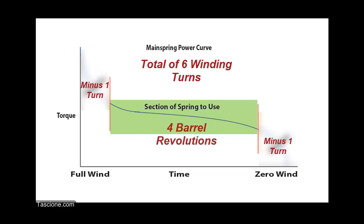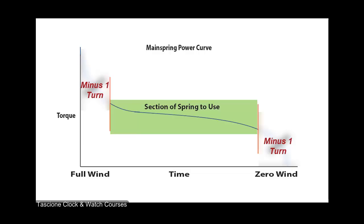So by designing the movement to run, say, eight hours for each revolution of the barrel, we can see that the total of four revolutions will allow 32 hours running time on one full winding, and that 32-hour period will be driven by the flattest portion of the mainspring. A very simple yet effective design that had a big impact on horology.